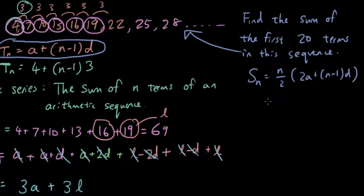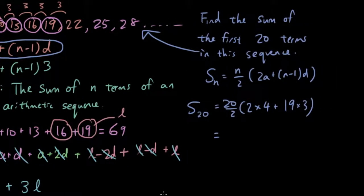So Sn equals n divided by 2 bracket 2a plus n minus 1d. So put that into the formula. We got S20 equals 20 divided by 2 bracket 2 times a is 4, because that was the first term. Plus 19, because 20 minus 1 is 19. D is 3. So putting all this into the calculator, and the answer is 650.